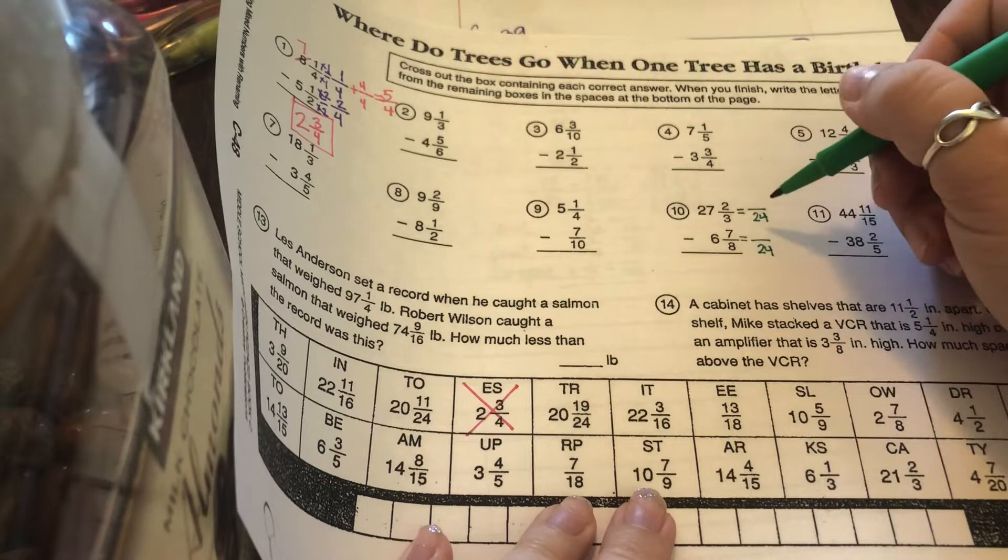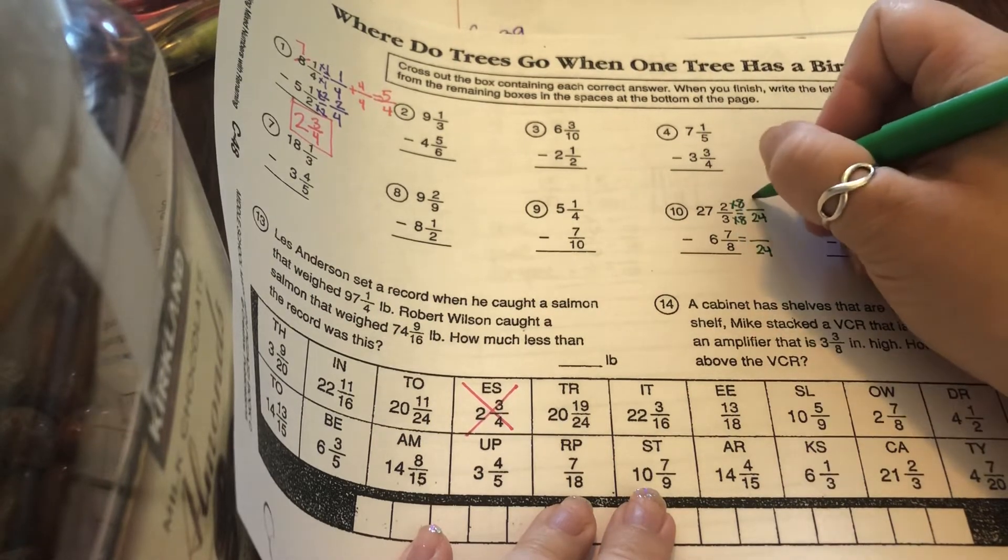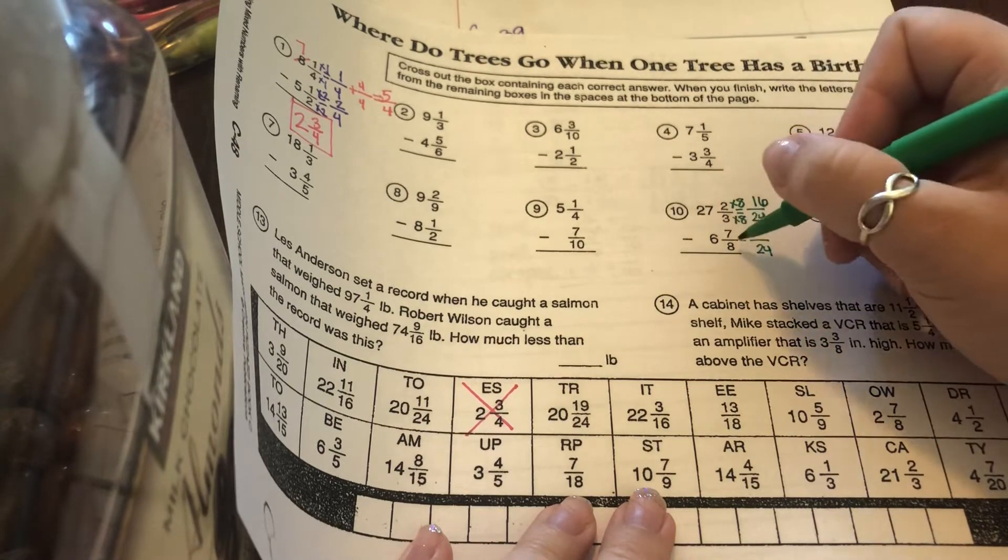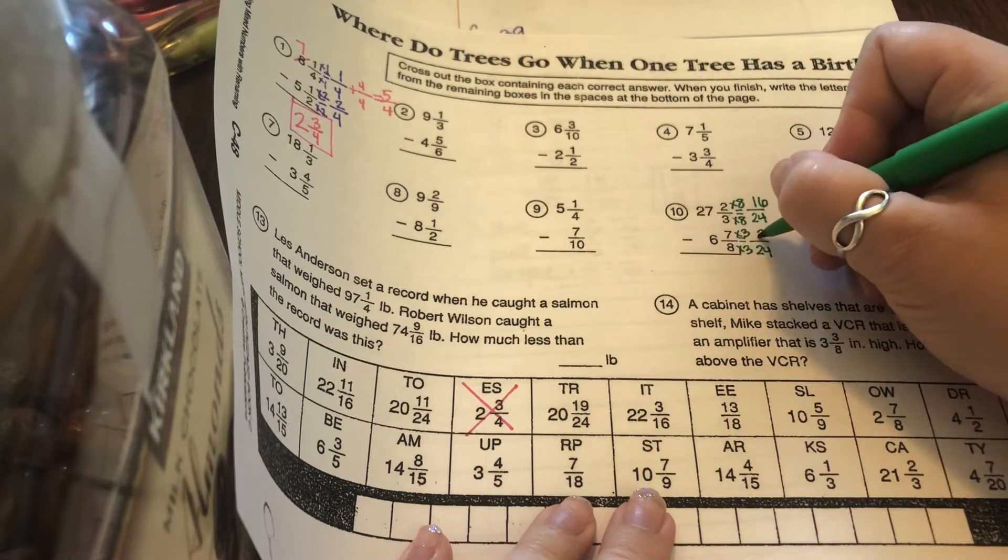So, 3 times what was 24? 8. So, 2 times 8 is 16. 8 times what is 24? 3. So, 7 times 3 is 21.